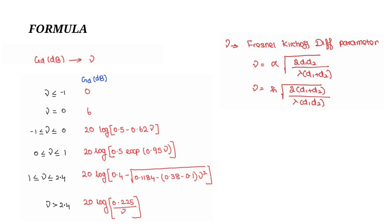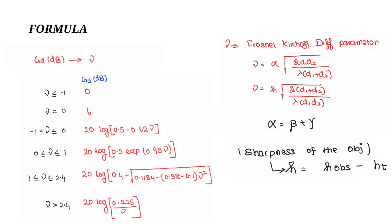In both formulas, you will get the same Fresnel-Kirchhoff diffraction parameter value. The formula to calculate the exterior angle is alpha equals beta plus gamma, where beta and gamma are the two interior angles. H is the excess height of the obstacle above the line of sight, calculated as total obstacle height minus transmitter height or receiver height.